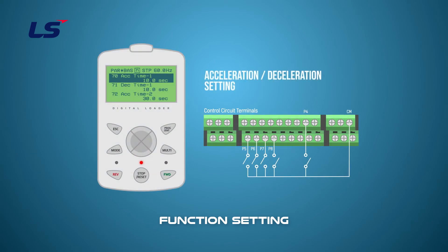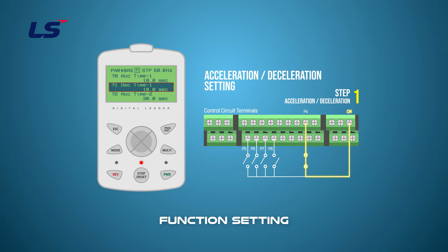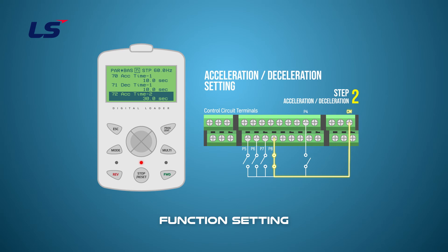Terminal P4, which is XCEL-L, stands for step 1, and sets the multi-stage acceleration-deceleration to BAS70, accelerate time 1, and BAS71, decelerate time 1. Terminal P8, which is XCEL-M, stands for step 2, and multi-step acceleration-deceleration for step 2 is set to BAS72, accelerate time 2, and BAS73, decelerate time 2. If terminals P4 and P8 are entered at the same time, it is set to multi-step 3 and reflects the acceleration and deceleration times set at BAS74, accelerate time 3, and BAS75, decelerate time 3.